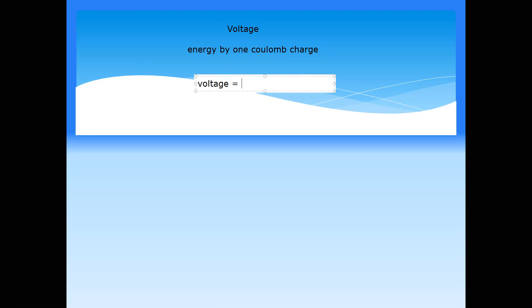The charge which a particle carries is measured in coulombs. The formula for voltage is: voltage equals energy divided by charge. So voltage tells us how much energy is carried by the charge.